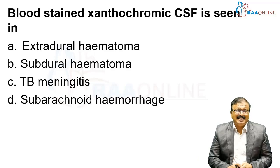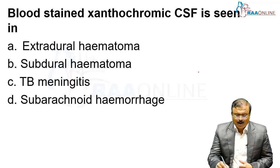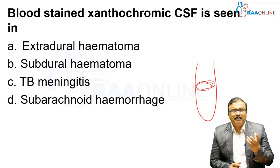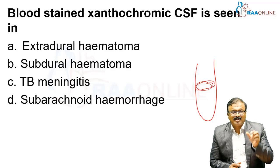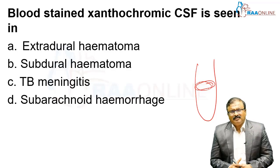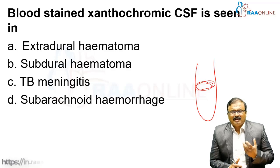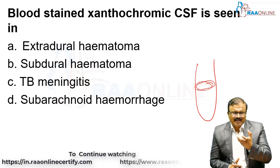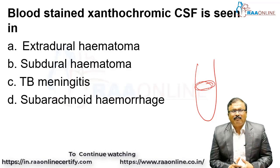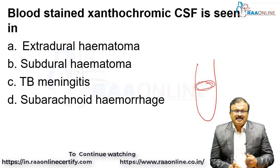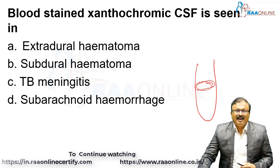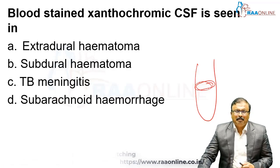CSF in TB meningitis will have a cobweb coagulum on standing. You keep the CSF in a test tube vertically and observe — after a few hours, you can see the cobweb coagulum, though not in all patients. In early TB meningitis, you may not see this picture.